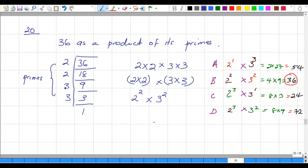Can't use two anymore. We go to the next smallest prime, which would be three. So three into nine would go three times, and three into three, one. Here are the prime factors.